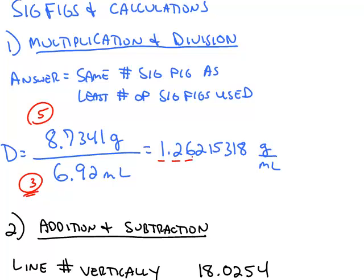So the 1, the 2, and the 6 are all meaningful digits, and we're going to round that 6. So this answer is going to be 1.26 grams per milliliter.